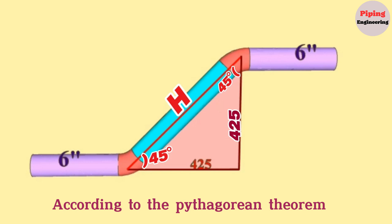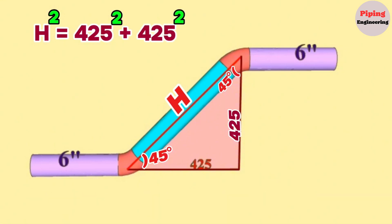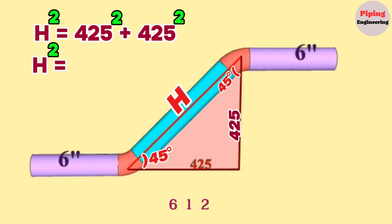According to the Pythagorean theorem, hypotenuse H squared will be equal to 425 squared plus 425 squared. Continued to calculate, H squared will be equal to 361250.